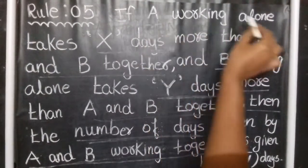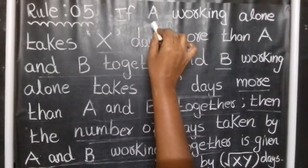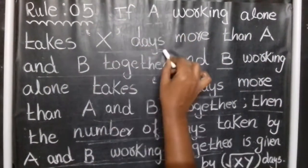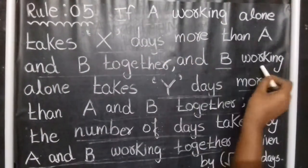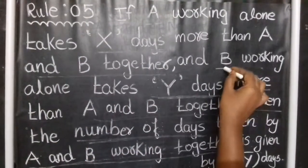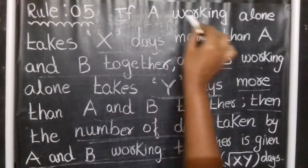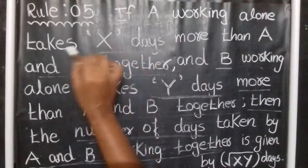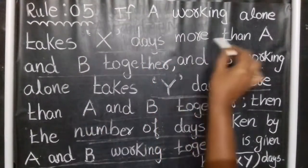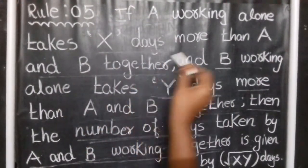In the question: A working alone takes X days more than A and B together. B working alone takes Y days more than A and B together.